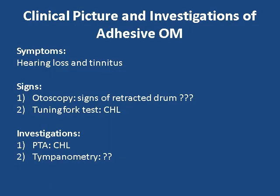Clinical picture of adhesive otitis media: the patient presents with hearing loss and tinnitus. By otoscopy, you find signs of a retracted drum — shortened handle of malleus, prominent lateral process, exaggerated anterior and posterior malleolar folds, distorted cone of light, and limited mobility of the tympanic membrane by sigilization. You can also find white patches of tympanosclerosis. Tuning fork testing reveals conductive hearing loss — bone conduction better than air conduction.